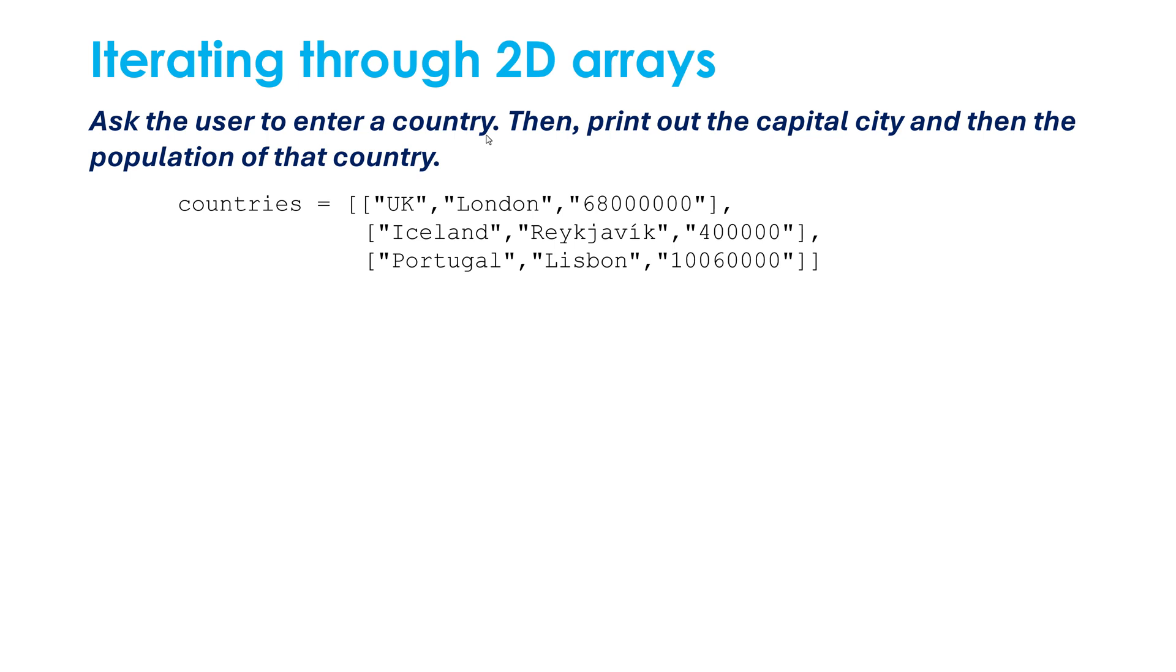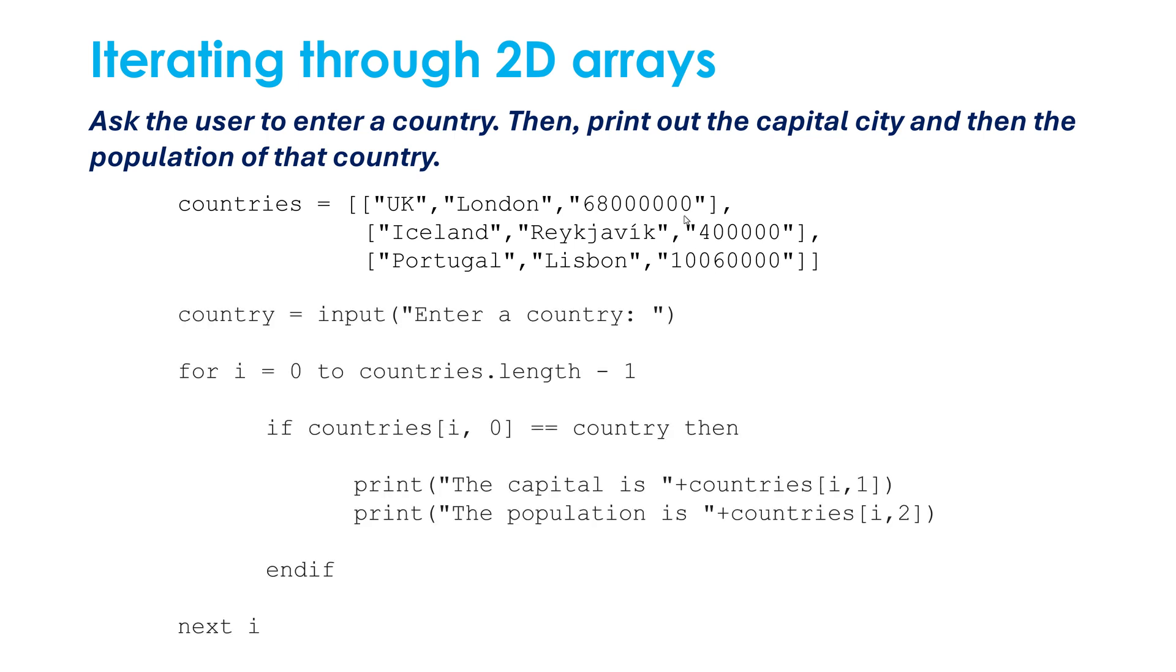Well first of all I can ask the user to enter a country, that's easy. But my approach is going to be to iterate through each of our arrays within countries, check to see if the first element is equal to what the user typed in. So did the user type in UK? No. Did they type in Iceland? No. Did they type in Portugal? Yeah. Then once I've found that array, I can then just index element one in that array and element two in that array.